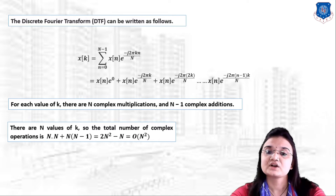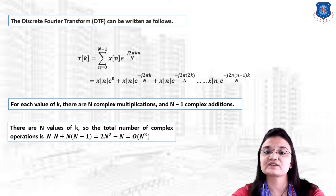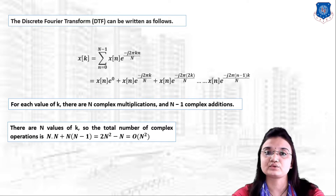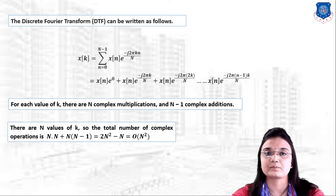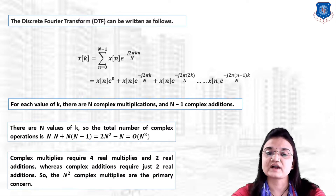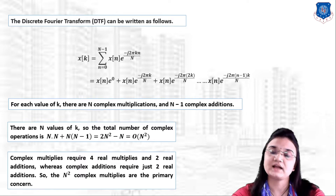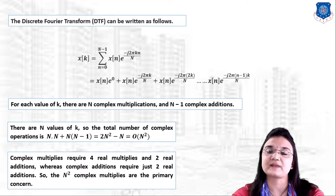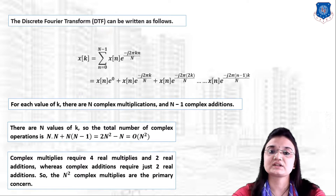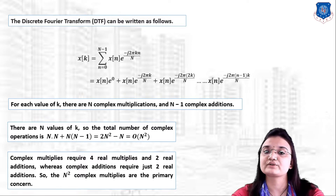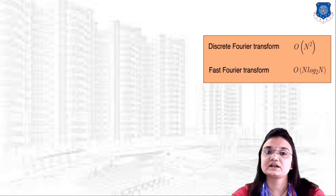There are N values of k, so the total number of complex operations is N·N + N·(N−1), which simplifies to 2N²−N. We can say that we have to perform on the order of N² operations. Complex multiplies require four real multiplies and two real additions, while complex additions require just two real additions. The N² complex multiplies are the primary concern.